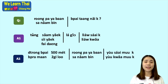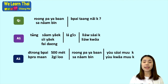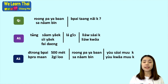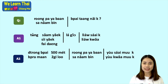For answer two, you can say 'brah maan ha roy me, rong phayabal yu sai m ka' — approximately five hundred meters, the hospital is on the left hand side. You can also use 'brah maan' to give approximate distances.